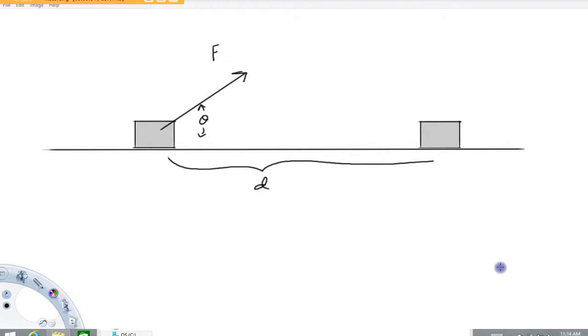Hi folks, this is intended to be video number two of a three or four part series on work. What we're going to talk about in this video is how to calculate the work done on an object by a force when the force makes some sort of angle with the displacement.